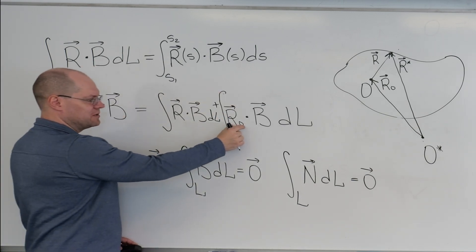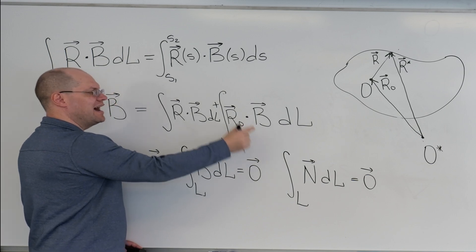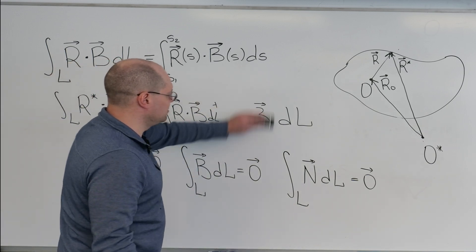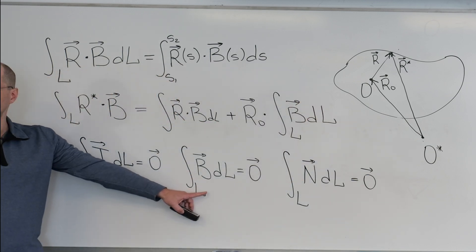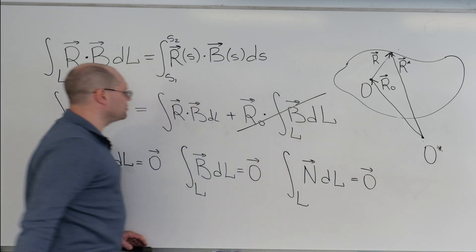And then in this integral, because this quantity is constant, I can take it outside the integral. Right? And that integral, of course, equals zero. So this part drops out.